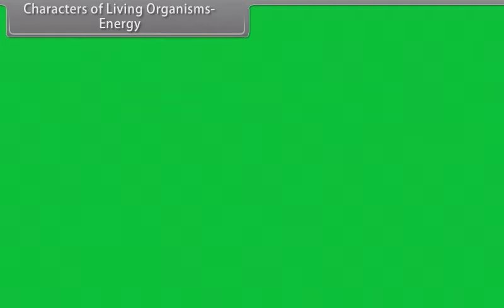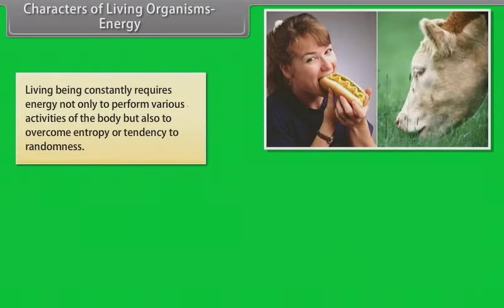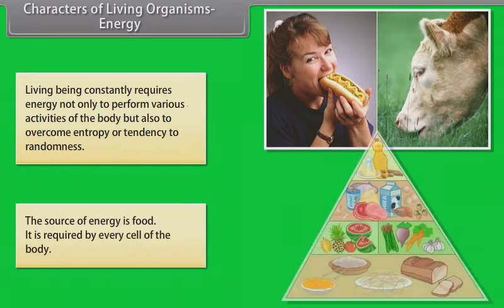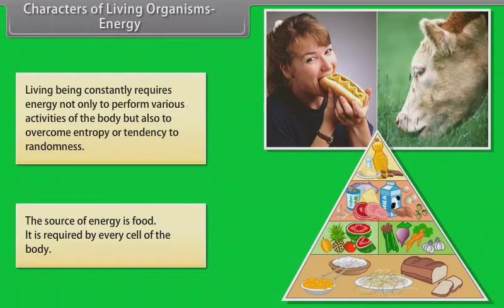Characters of living organisms - Energy: Living beings constantly require energy not only to perform various activities of the body but also to overcome entropy or tendency of randomness. The source of energy is food. It is required by every cell of the body.